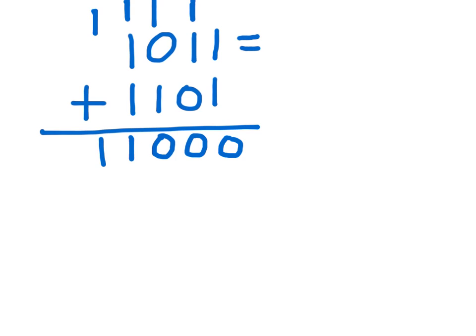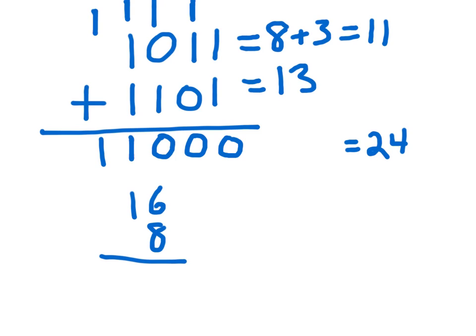And we can test this very easily by knowing that this is 8 plus 3, which is 11. And we know that this is 13. So 11 and 13 is going to be 24. So we know that the answer needs to be 24. And we can simply check it by saying 16 and 8. And we know that it's going to be 24. So that's how this method of binary addition works.